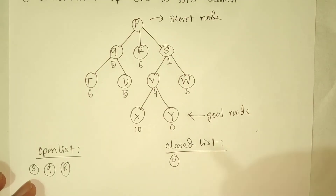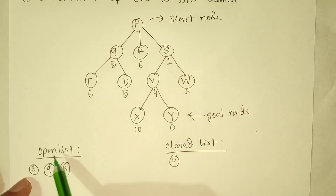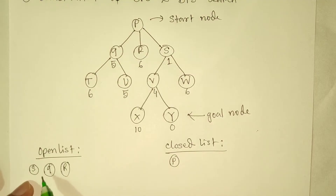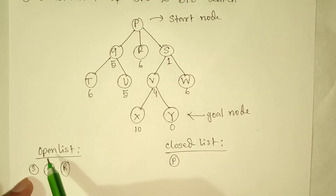We will choose from the open list of 3 nodes, and we will choose S. We will choose the node with the best heuristic value to maintain the sequence of nodes. So, we will choose the 2nd and 3rd best nodes. We will choose the most promising node to proceed.